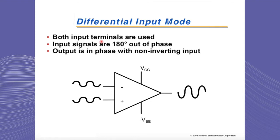In the differential input mode, the signal is applied to both input terminals. These signals have to be out of phase, and the output is going to be completely in phase with the non-inverting signal. If the signals applied to both inputs are in phase, there should be no output, and that input signal is referred to as the common mode signal. Note that we will interchange between the terms 'output is grounded,' 'output is sitting at mid-supply,' and 'output is zero,' since we are assuming dual-supply voltage with a negative and positive voltage on the supply ends.